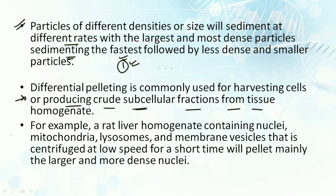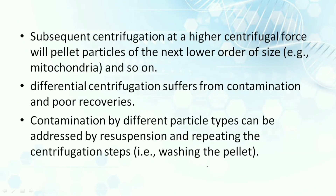Differential pelleting is commonly used for harvesting cells or producing crude subcellular fractions from tissue homogenate. For example, a rat liver homogenate containing nuclei, mitochondria, and all other organelles, when centrifuged at lower speed for a short time, will pellet mainly the larger and more dense nuclei. Low speed and short time pellets out the largest material initially present. Subsequent centrifugation at higher centrifugal force will pellet the particles of the next lower order of size, such as mitochondria.